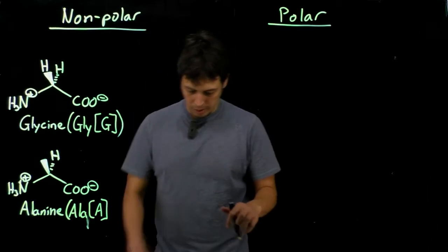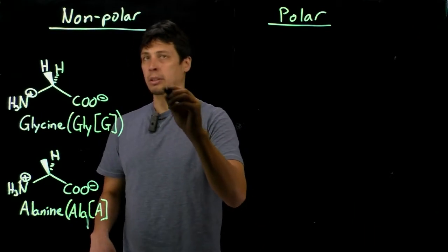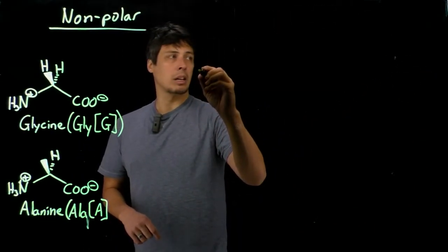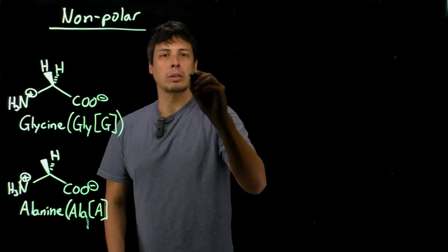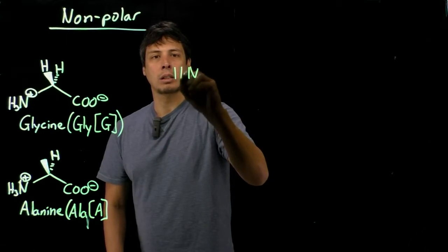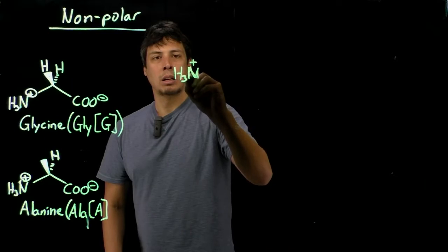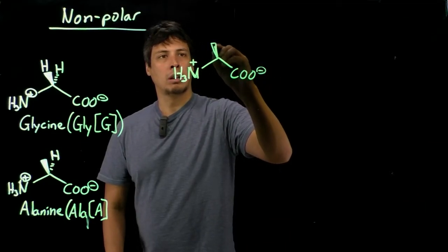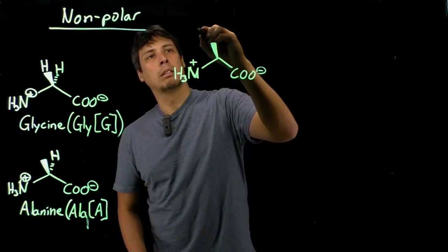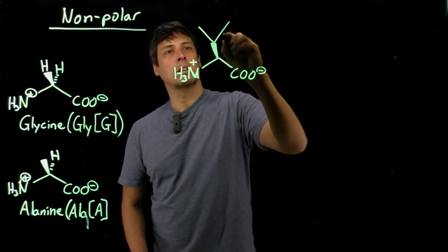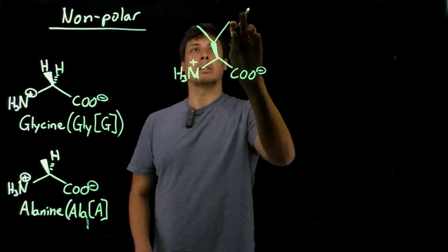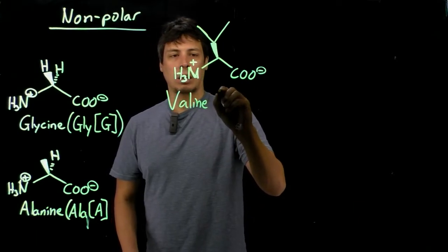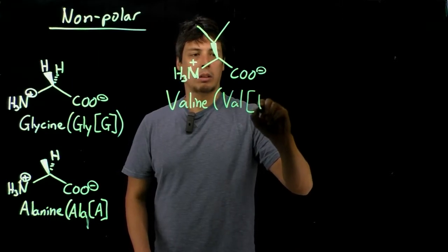So now we have the branched nonpolar amino acids. It doesn't look like we'll make the polar on this board, we'll have to erase it, but let's look at the branched nonpolar amino acids. We're going to start with valine, so NH3+, carboxylate, wedge. Valine starts with a V, and the side chain looks like a V. So this is CH3 here, CH3 here, and a CH here. Valine three-letter code is VAL, one-letter code is V.